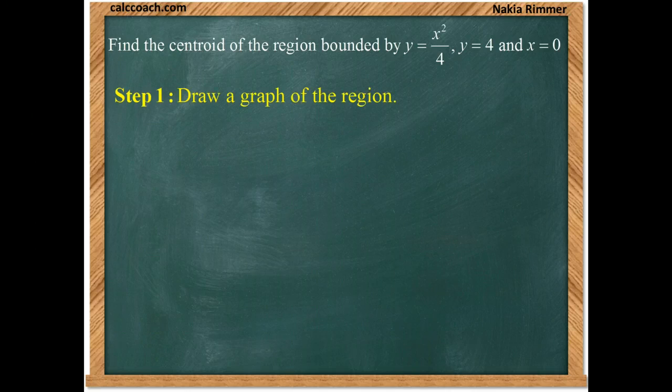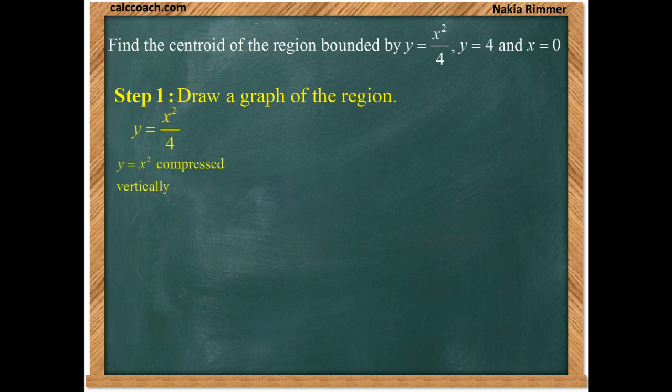First up, let's draw the graph of the region and understand exactly what's going on with it. Let's take a look at y equals x squared over 4. It's a parabola. The division by 4 causes a compression vertically. It means it's just been pushed in instead of stretched out.